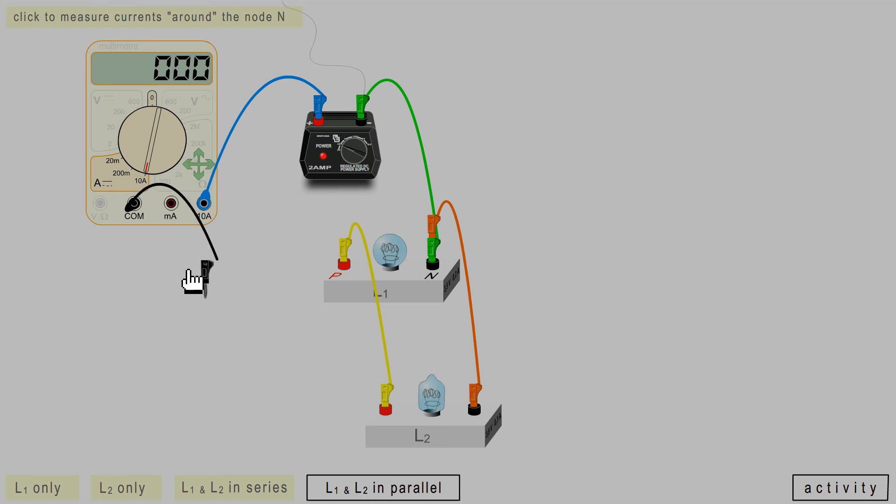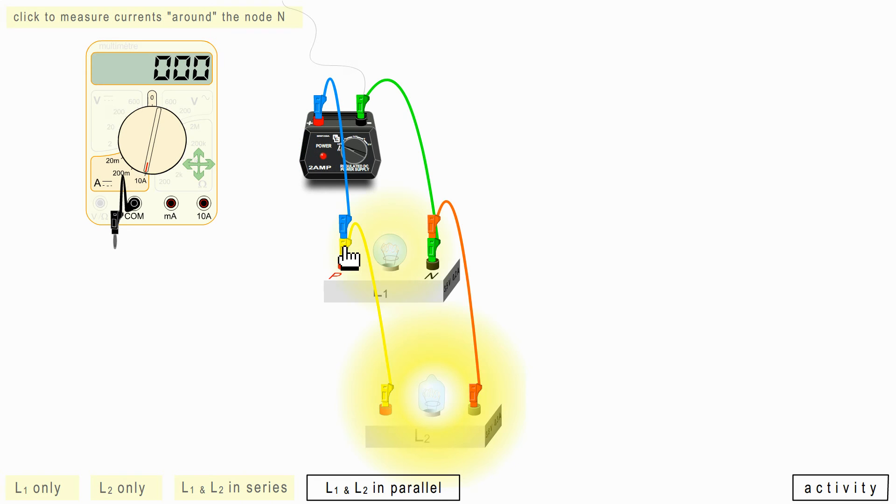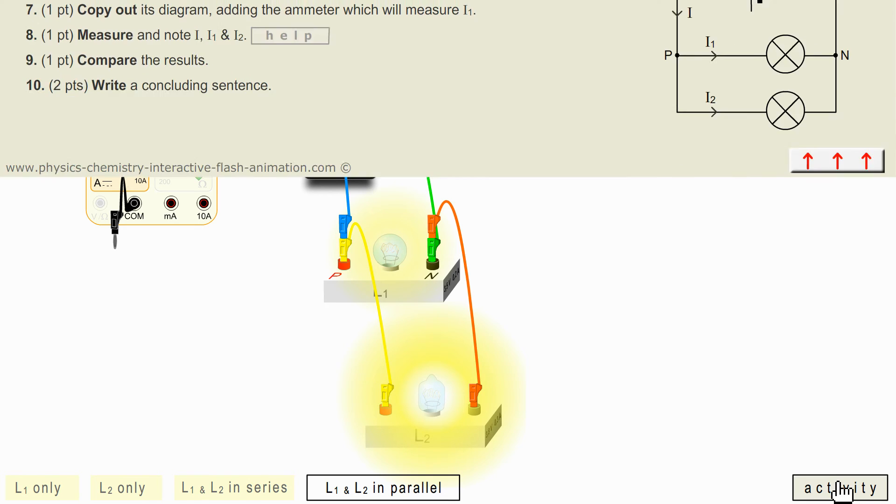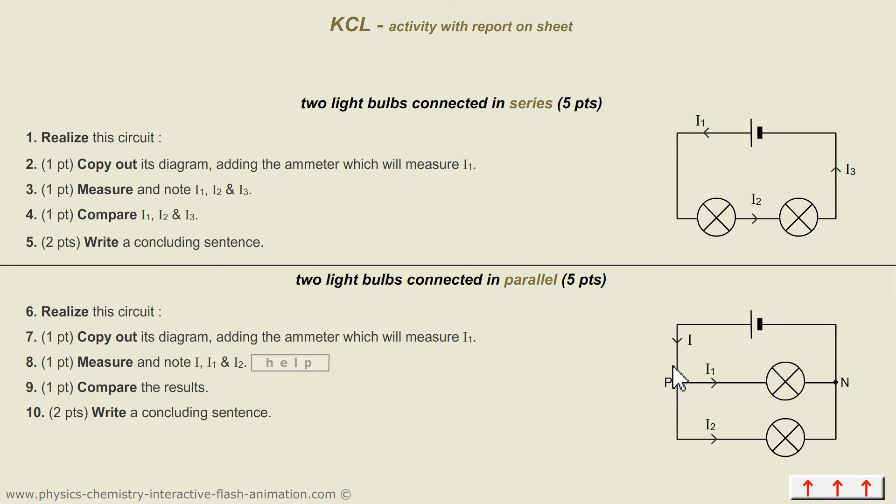I now connect the ammeter to measure the current in the L1 lamp. Let's look at the diagram. So I would have to put the ammeter here between the node and the bulb.